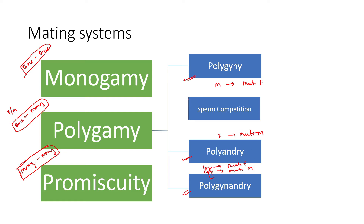Sperm competition is a part of both polygyny and polygynandry. When multiple males mate with a particular female, multiple kinds of sperm are present in the female tract and they compete with each other. This can happen in polyandry, polygynandry, and promiscuity situations — any scenario where multiple males mate with a particular female leads to sperm competition.